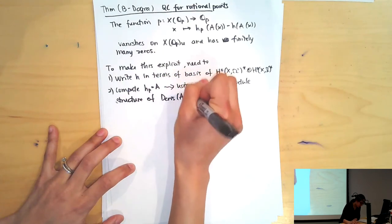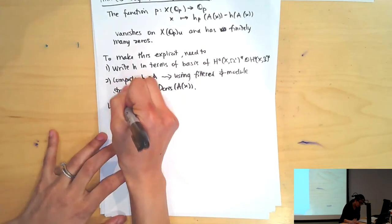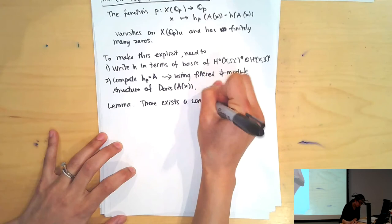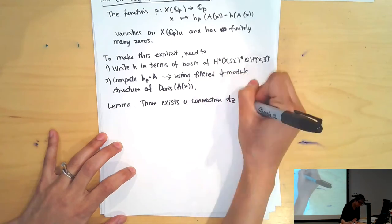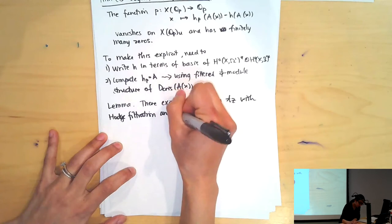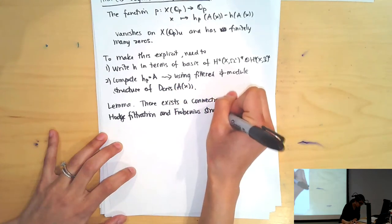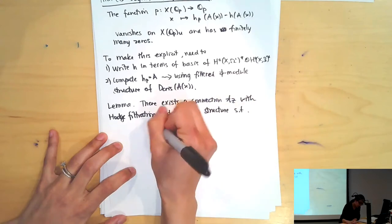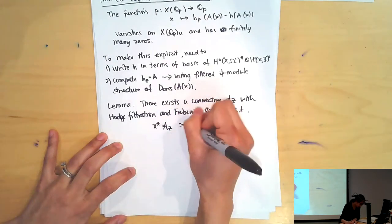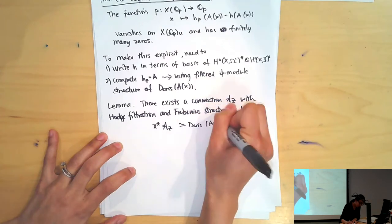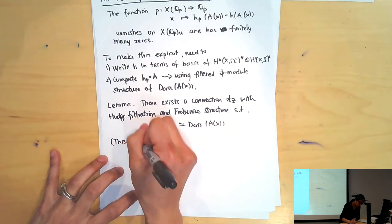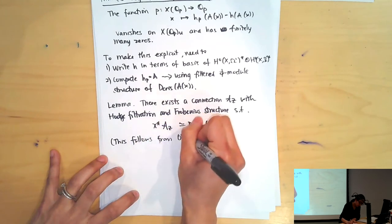We'll do this using the filtered phi-module structure of D_cris(V_X). A lemma is that there exists a connection A_Z with Hodge filtration and Frobenius structure such that if I pull back for any p-adic point X on the curve, this is isomorphic to D_cris(A_X), an isomorphism of filtered phi-modules.